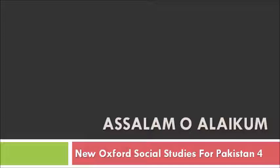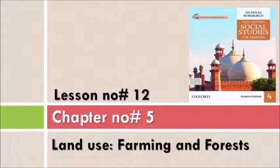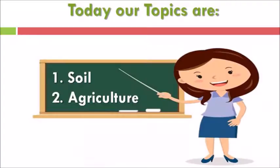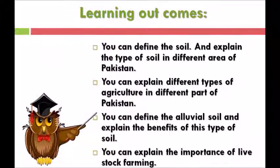Assalamu Alaikum. New Oxford Social Studies for Pakistan, Class 4. Dear students, today we are going to start lesson number 12 from chapter number 5: Land Use, Farming and Forests. Today our topics are: first, use of soil; second, agriculture. Learning outcomes: you can define soil and explain the types of soil in different areas of Pakistan, explain different types of agriculture in different parts of Pakistan, define alluvial soil and explain its benefits, and explain the importance of livestock farming.